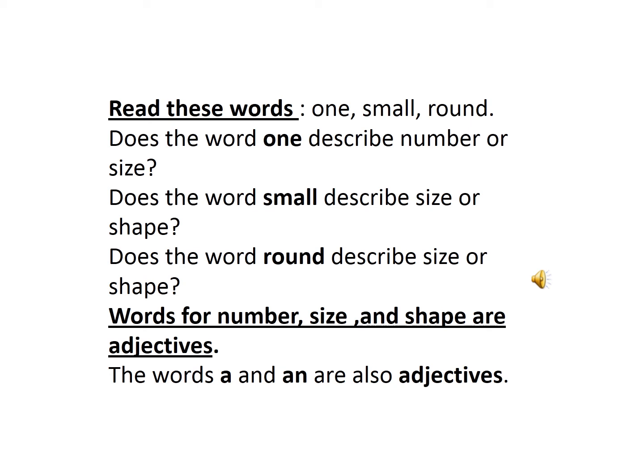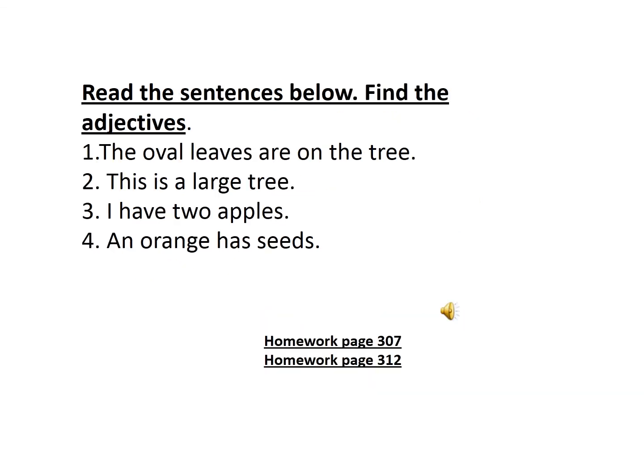The words 'a' and 'an' are also adjectives. Now, read the sentences below and find the adjectives. Number 1: The oval leaves are on the tree. Where is the adjective? Oval. Excellent. Oval describes shape.